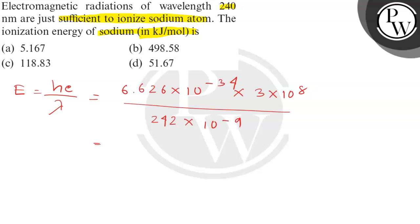Upon simplifying this, we get 8.21 into 10 to the power minus 19.